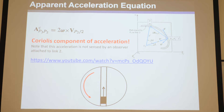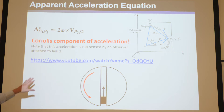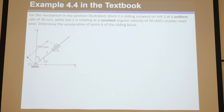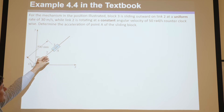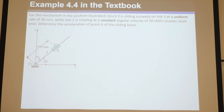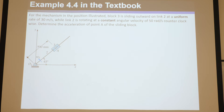If that was confusing, we're going to do an example — very similar to this — and hopefully it'll hammer out all confusion with Coriolis. Go ahead and click on that YouTube video and check it out, and Google a bunch of stuff about Coriolis — it's a cool acceleration. So say you have a mechanism: you've got link two, and link three is sliding on link two — a prism joint — and this is rotating around this pin. For the mechanism in the position illustrated, at this very instant when this is 45 degrees, block three is sliding outward on link two at a uniform rate of 30 meters per second, while link two is rotating at a constant angular velocity of 50 radians per second counterclockwise.